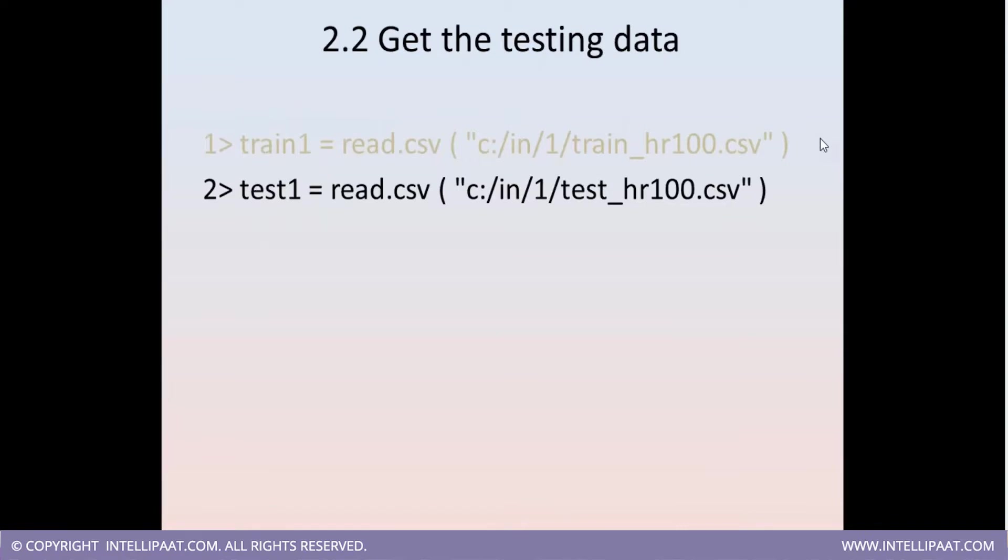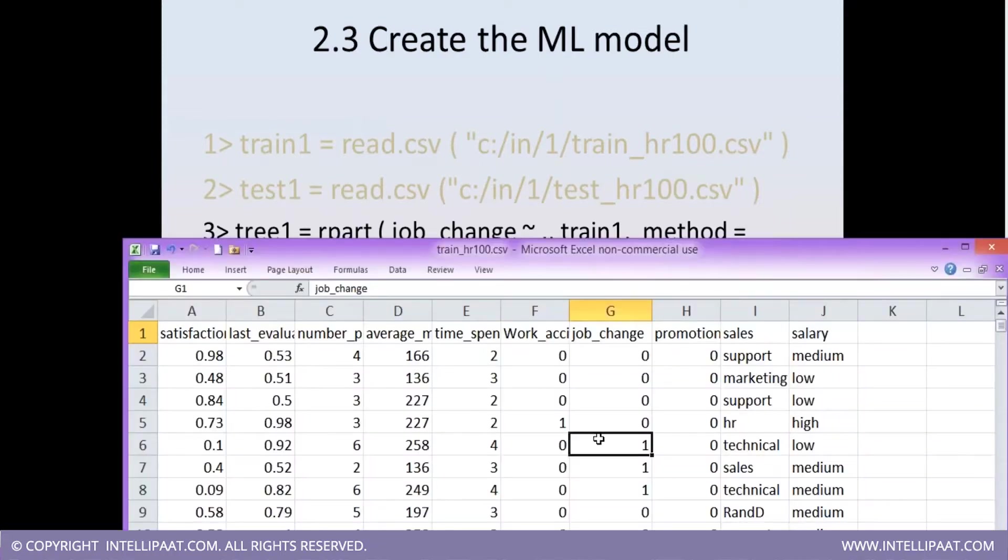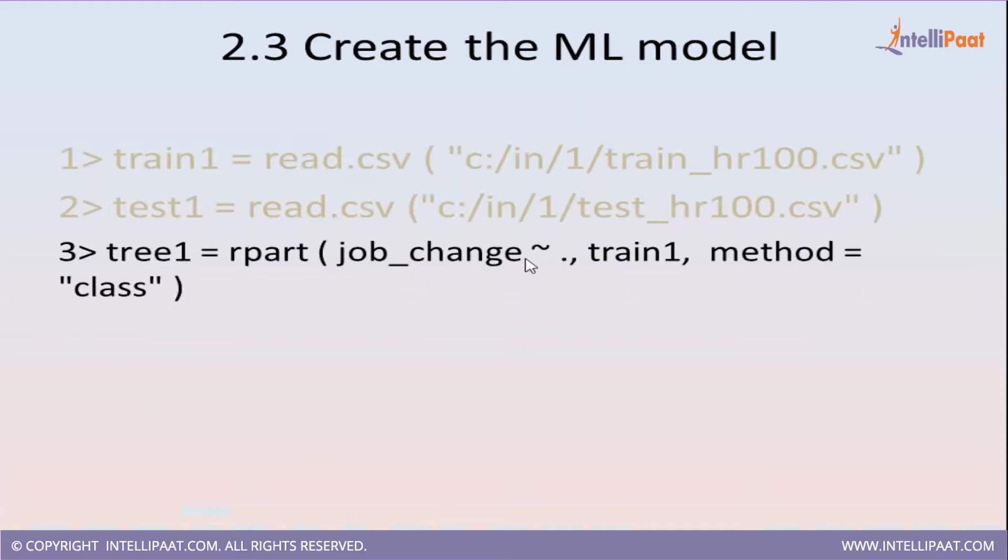So till now what we have discussed: we have loaded the test data and the training data. Then I'm going to analyze this factor job_change based on my training data. This tilde sign shows that I want to correlate job_change with the rest of the other factors. Dot means rest of the columns.